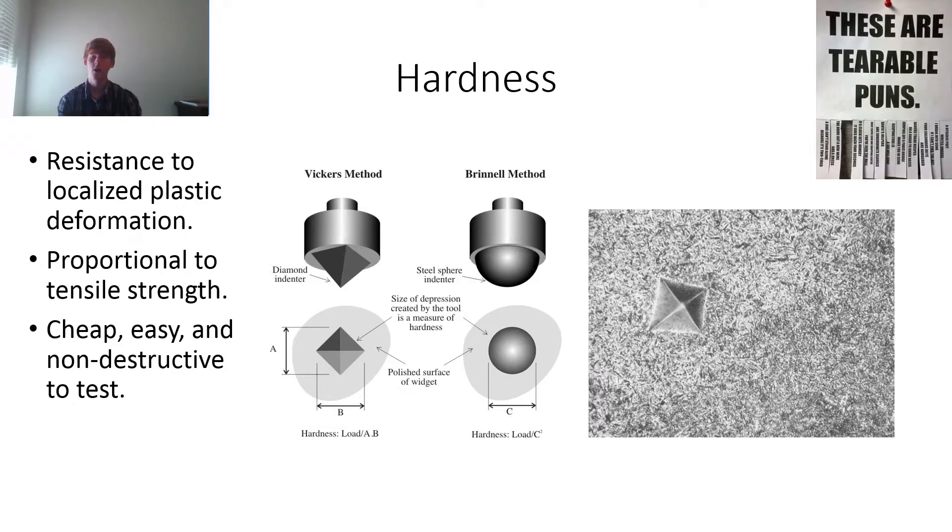So we're going to talk about hardness. Hardness is resistance to localized plastic deformation. And the way that we test this is for Vickers method, we take a pyramid diamond indenter and we press it into the material. Or for Brinell's method, we take a sphere and we press it into the material. We measure how much it indents into the material. Now you might be thinking, why do we need to know this? Well, hardness really isn't important by itself. But what is important is that it's roughly proportional to tensile strength.